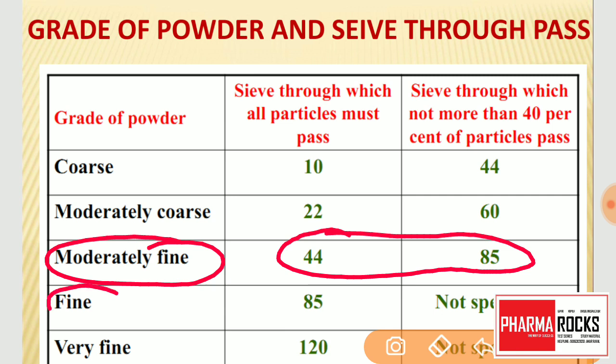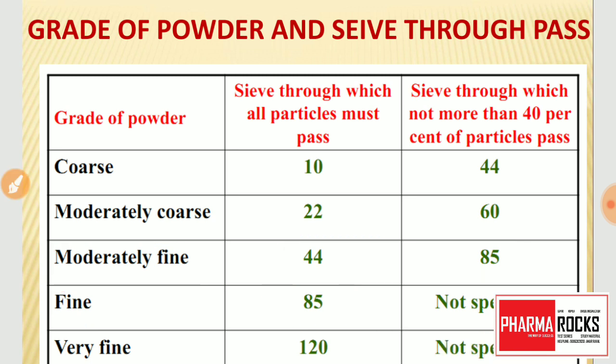Then for fine powder, the grade is 85, and for very fine powder the grade is 120. This is the important table — make sure to revise it.